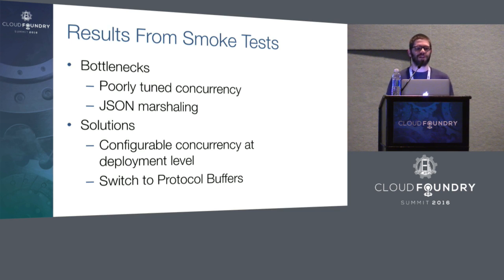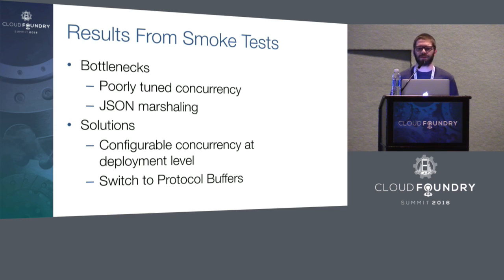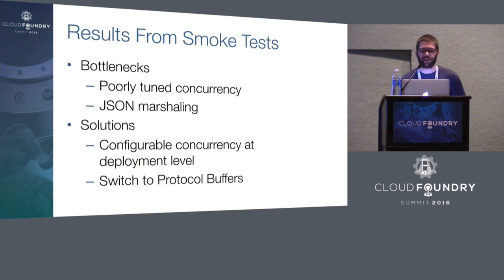To fix those issues, we first replaced JSON with Protocol Buffers, a mechanism to efficiently transmit structured data that is both smaller and faster than JSON, and was great for us because of the tooling the community provides for code generation and go-link for these protocol buffers. We also replaced REST with RPC, which allowed us to express our API in a more concise way and reduce the number of network calls for simple operations. Finally, to fix the concurrency problem, we made Diego more configurable — as you grow your Diego cluster and give VMs more resources, you can also grow those concurrency variables.